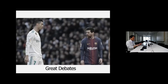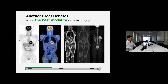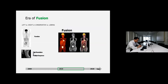In our department there has been a great debate — like Ronaldo and Messi — about what the best modality is for cancer imaging. Around 2000 to 2010, there was a debate for the best modality in cancer imaging, more specifically PET versus MRI or PET versus CT. PET reflects functional imaging, while MRI or CT represent structural imaging with high resolution. But the winner was fusion imaging.